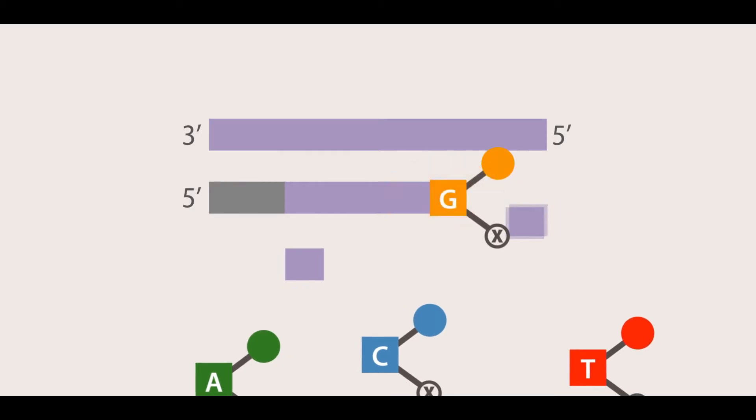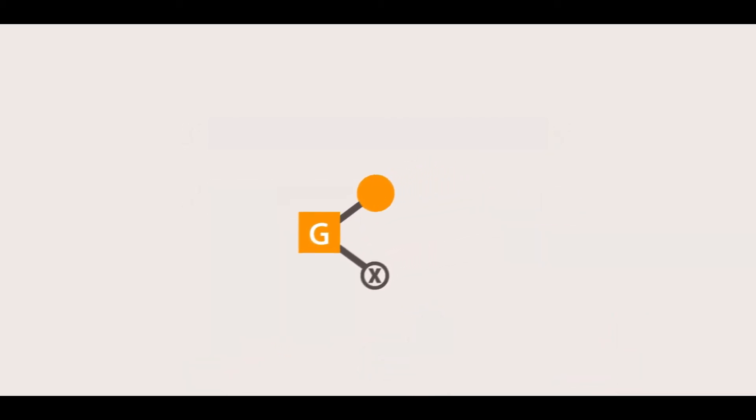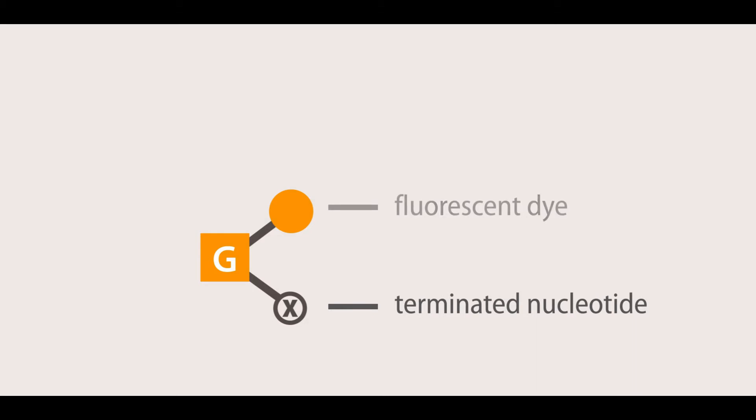However, they differ from natural deoxynucleotides in two ways. One, they lack a three-prime hydroxyl group which is required for further DNA extension resulting in chain termination once incorporated in the DNA molecule. And two, each dideoxynucleotide has a unique fluorescent dye attached to it allowing for automatic detection of the DNA sequence.